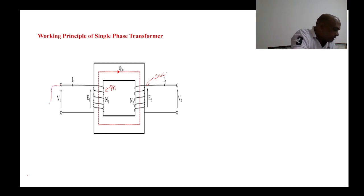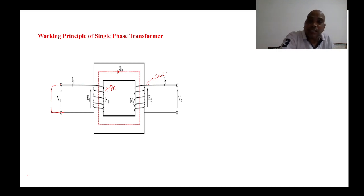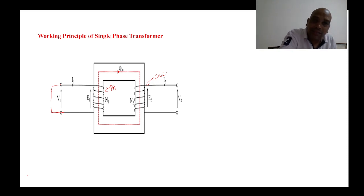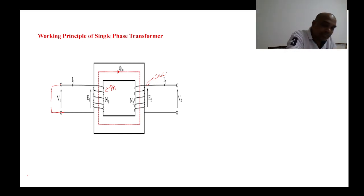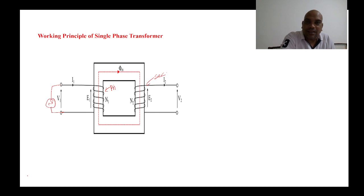Now, which type of supply should you give to the coil? If you give DC supply, a constant current passes through the coil, so a constant magnetic field is developed. Since the conductor is stationary and the magnetic field is also constant, there is no change in flux. Therefore, no EMF is induced in the coil.